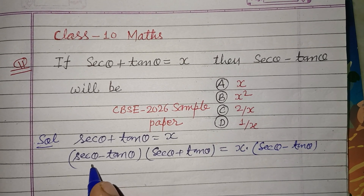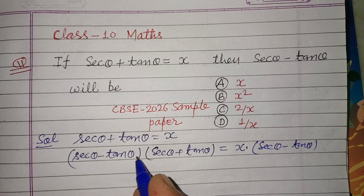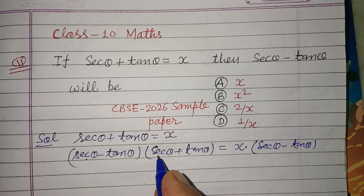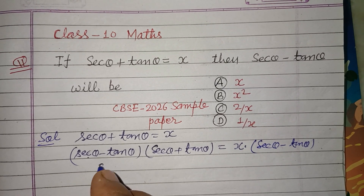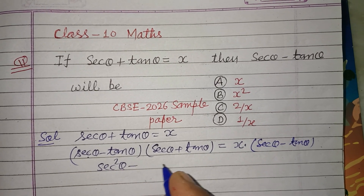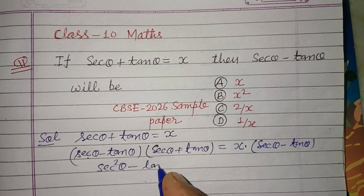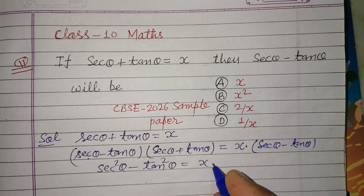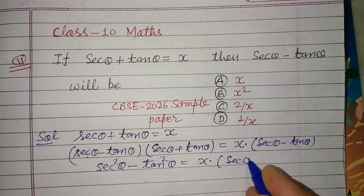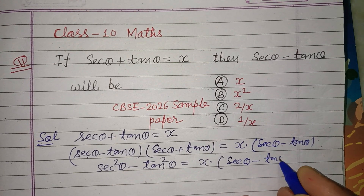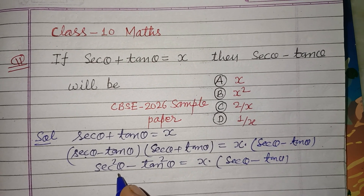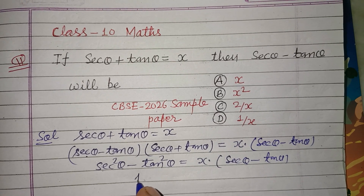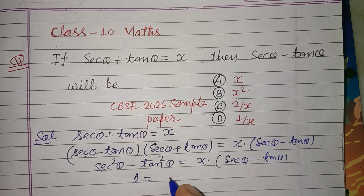Here we multiplied both sides by sec θ - tan θ. Using the identity (a + b)(a - b) = a² - b², the left side becomes sec²θ - tan²θ, and the right side is X times (sec θ - tan θ). Using the identity sec²θ - tan²θ = 1, the left side equals 1.